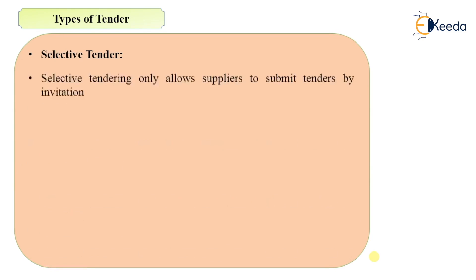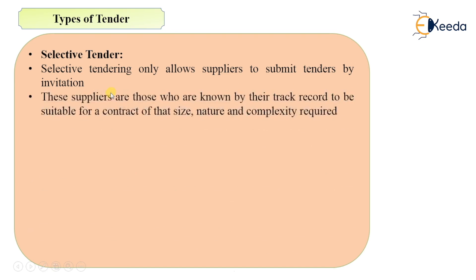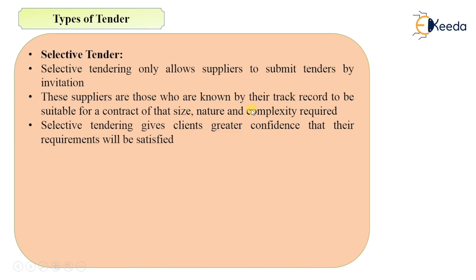The next type of tender is selective tender. Selective tendering only allows suppliers to submit tenders by invitation. These suppliers are known by their track record to be suitable for a contract of a particular size, nature, and complexity.